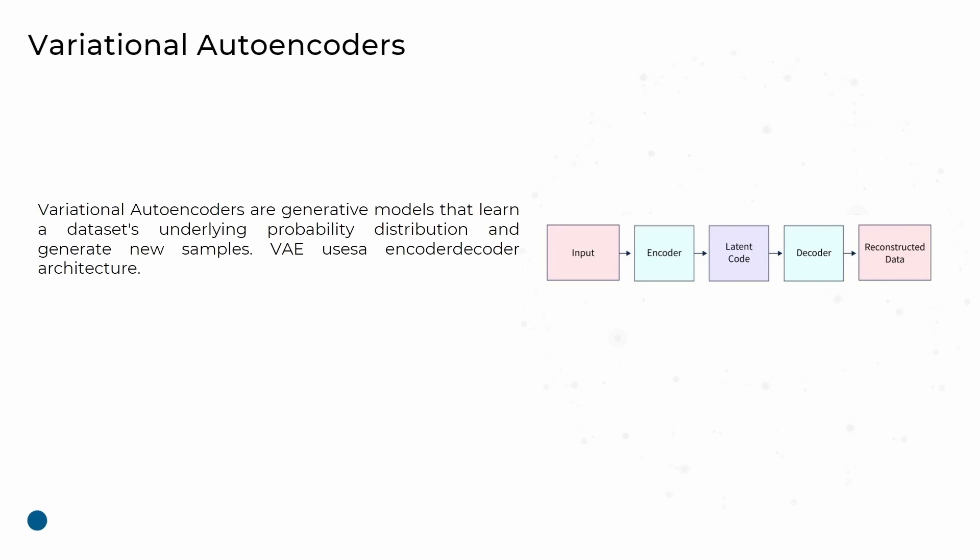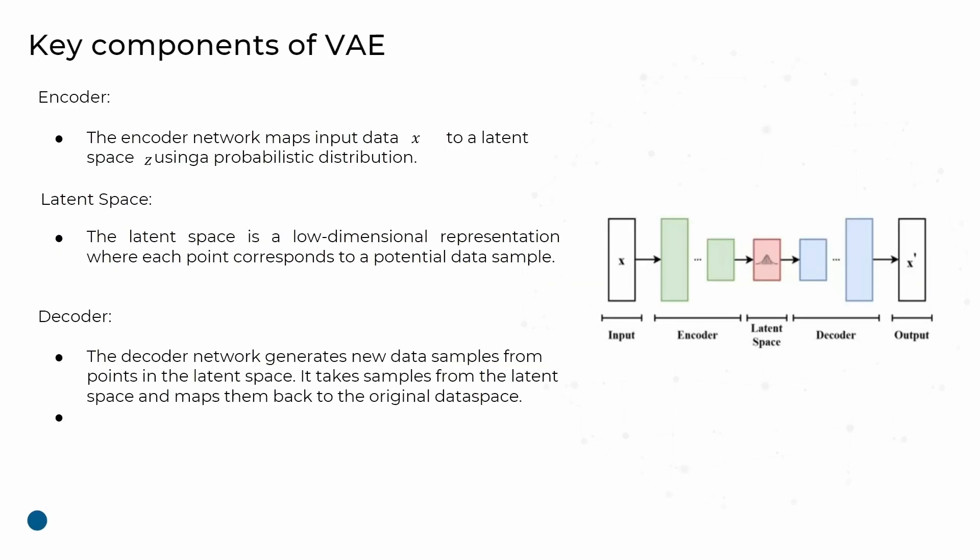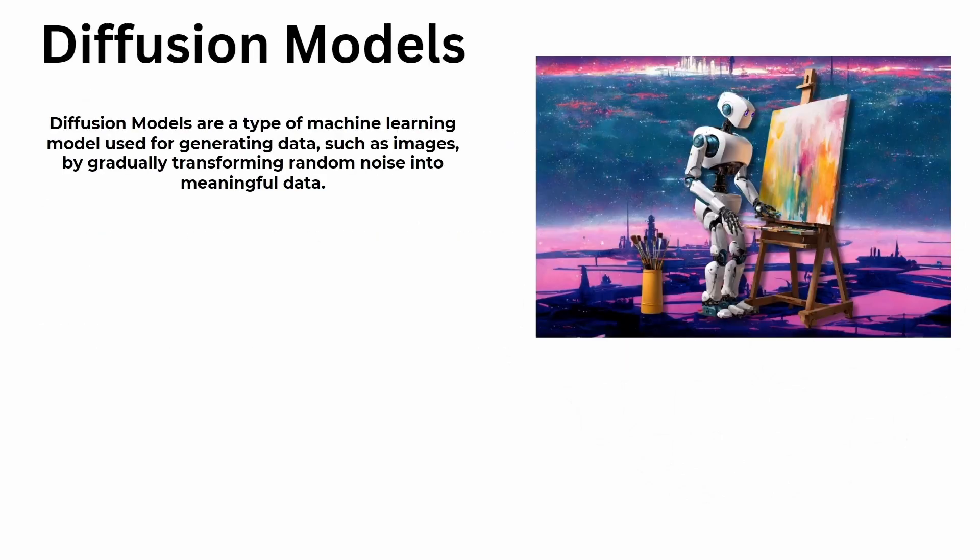We also get a loss function. The loss measures how well the decoder output matches the original input data. The goal is to make the reconstructed data as close as possible to the original data. So we've seen the encoder, latent space, and decoder parts.